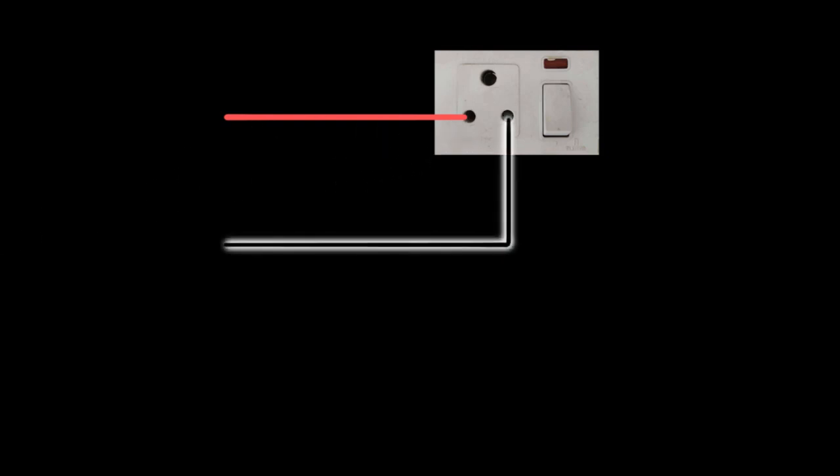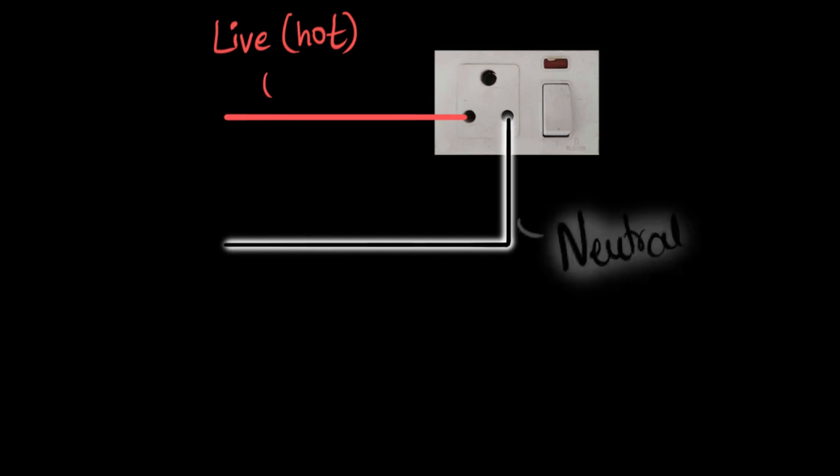A wire that comes from one of these bottom holes, one of the wires will be insulated with red color and the other one would be insulated with a black color. The red wire is often called the live wire, or the hot wire. And the black wire is often called the neutral wire.